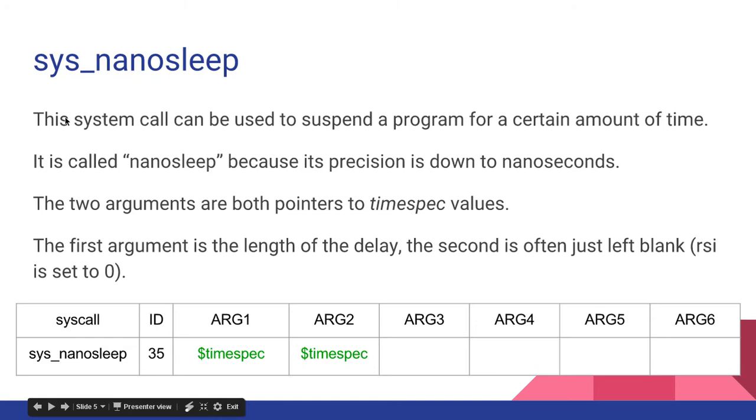So, sys_nanosleep, this system call can be used to suspend a program for a certain amount of time. It is called nanosleep because its precision is down to nanoseconds. The two arguments are both pointers to timespec values. The first argument is the length of the delay, and the second is often just left blank, so RSI is set to zero for the second argument.